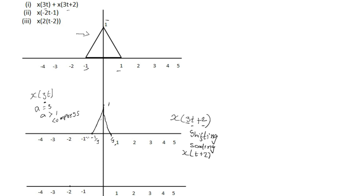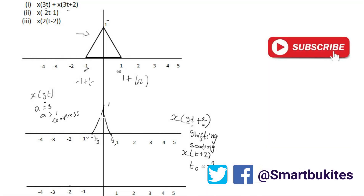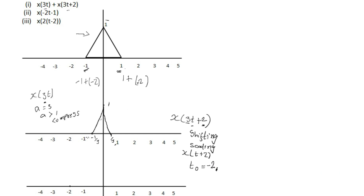Performing our shifting first for X(3t+2): we identify t₀ equals minus 2. Since t₀ equals minus 2, we take the limits of the original triangle — which are from minus 1 to 1 — and add t₀ to each limit. So we get 1 plus (minus 2) and minus 1 plus (minus 2).